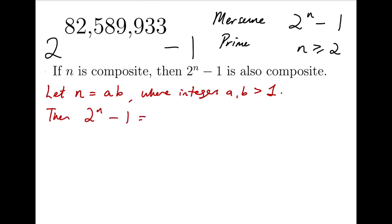Then 2 to the n minus 1 would equal to 2 to the ab minus 1. I can rewrite this number as 2 to the a and the whole thing to the power of b minus 1. Now imagine 2 to the a as another number. I call it m. So it's now m to the b minus 1.